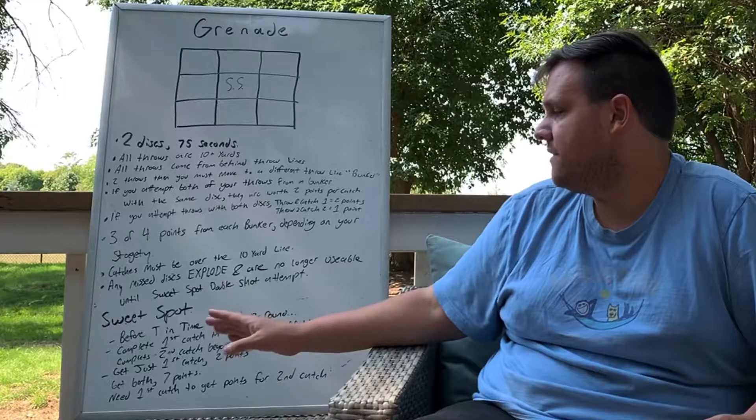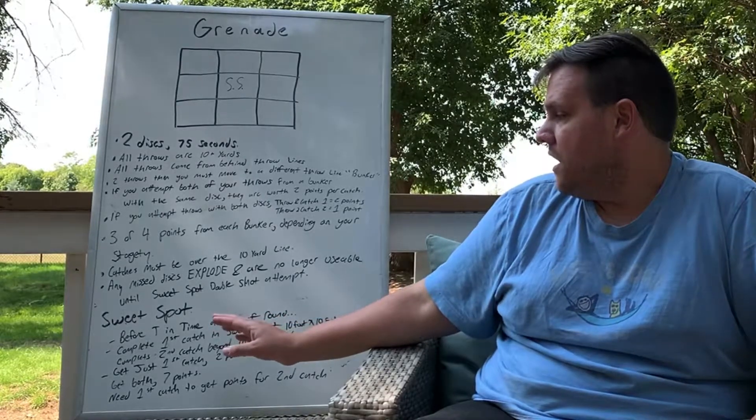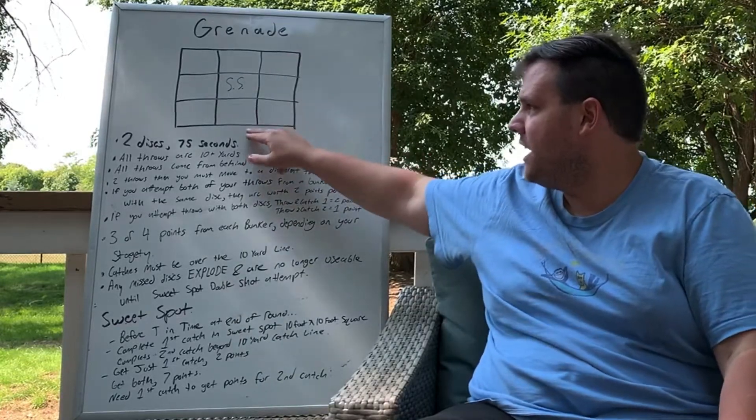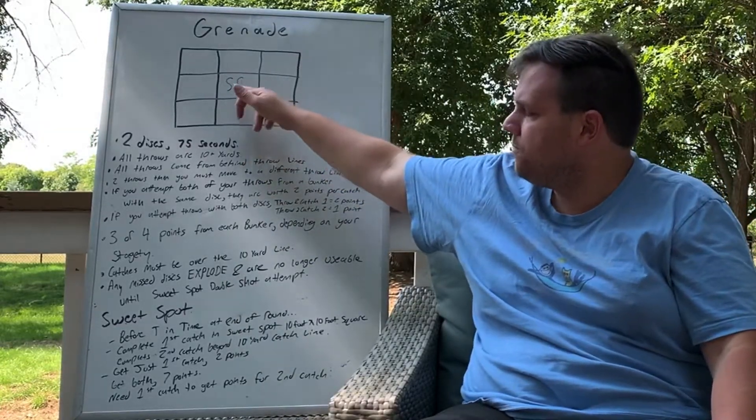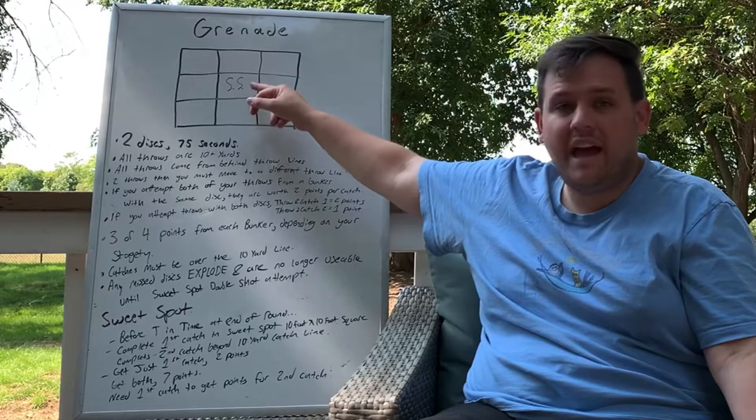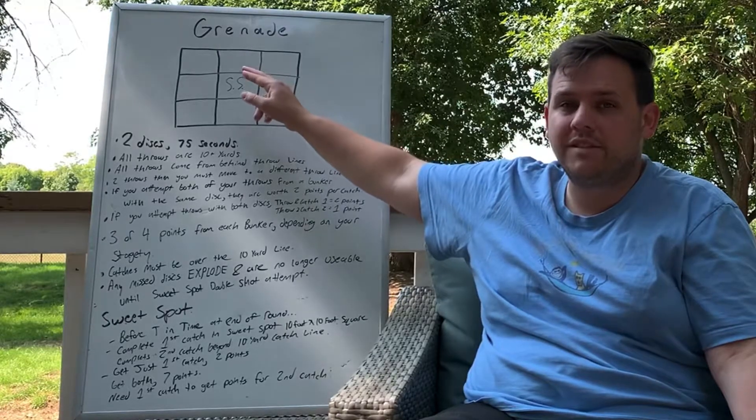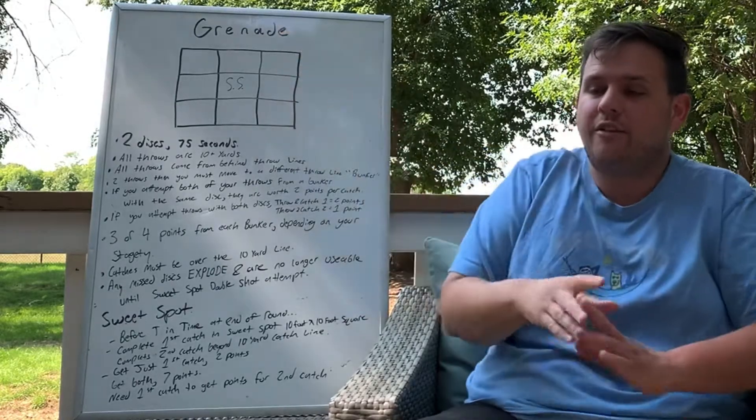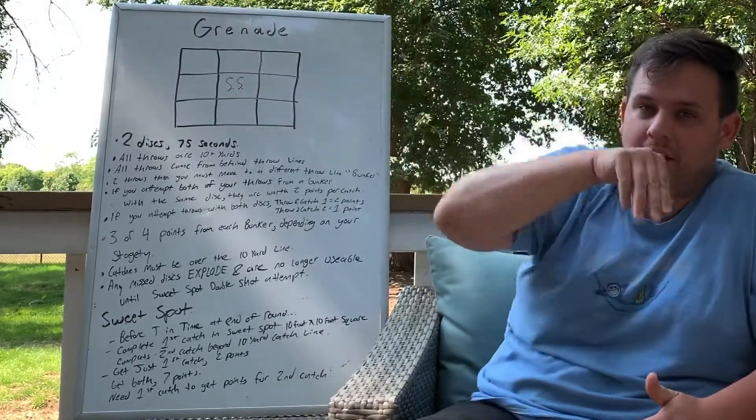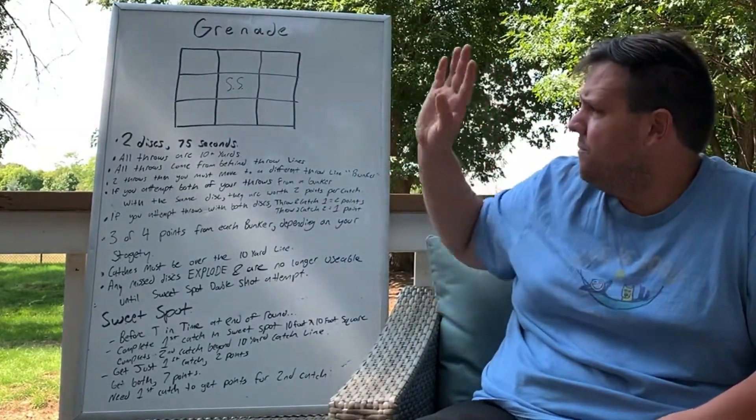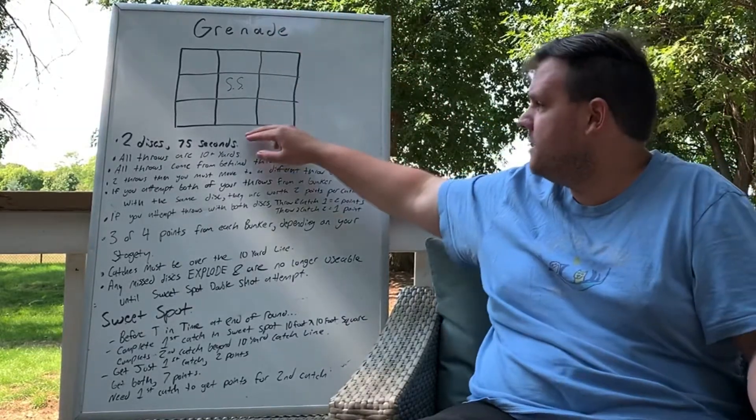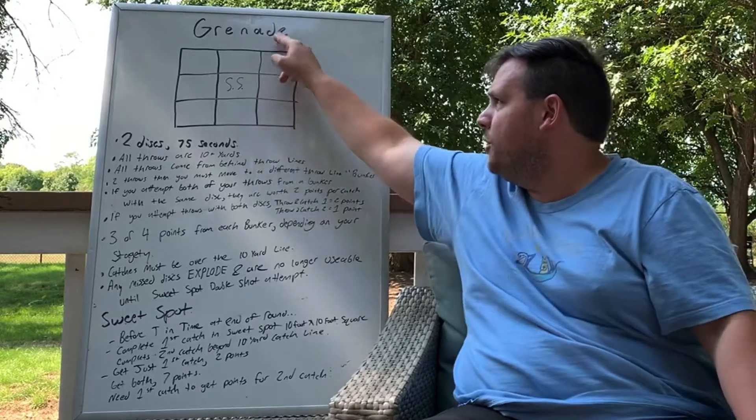Before time ends, you must complete this. Complete your first catch. From whatever throwing line you're at, you've got to throw it to the sweet spot square. That's worth two points. Then you're going to complete a second catch in forward momentum, 10 yards out or 30 feet out. You're going to do boom and then boom.